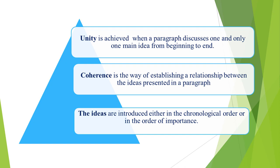What is coherence in a paragraph? Coherence means establishing a relationship between the ideas presented in a paragraph. It brings about a rationale in the arrangement of the ideas, which are introduced either in chronological order or in the order of importance. Besides, transitions that compare, contrast, illustrate, add, or show cause and effect build logical bridges. The ideas expressed in the paragraph flow smoothly from one to the other in a logical sequence, which helps the reader to understand the paragraph.